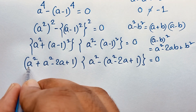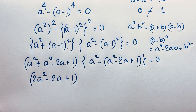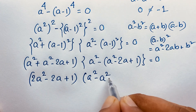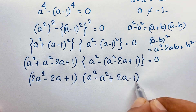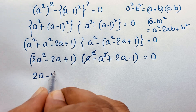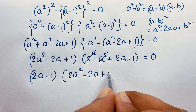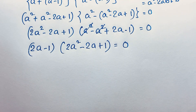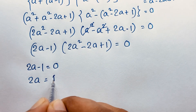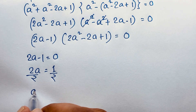Now combining terms, 2a squared minus 2ab plus 1, times the second factor, simplifies. The a squared and minus a squared cancel. We get 2ab minus 1 equal to 0, so 2ab equals 1. Dividing both sides by 2, we find a is equal to one half. So this is our final real answer for this exponential maths problem.